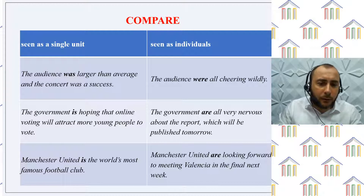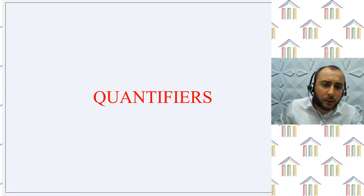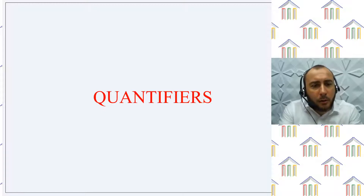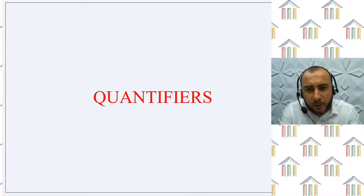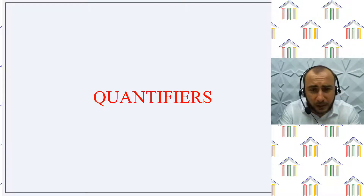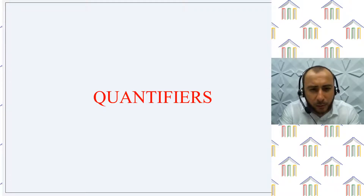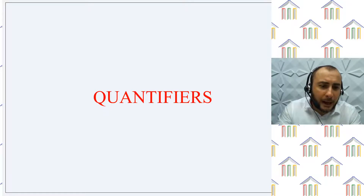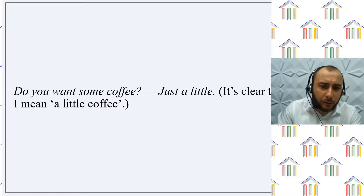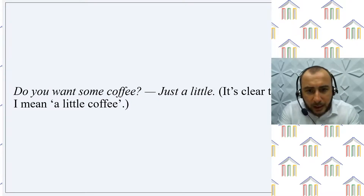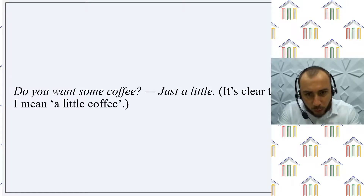And the last topic for today is quantifier. A quantifier — or квантификатор — is a word that usually comes before a noun and indicates the quantity of that object. For example, 'little juice' means немного сок (a little juice). Most quantifiers go together with nouns, but sometimes they are used independently when it is clear from context what object they refer to. For example: "Do you want some coffee?" — "Just a little." It's clear that I mean a little coffee.